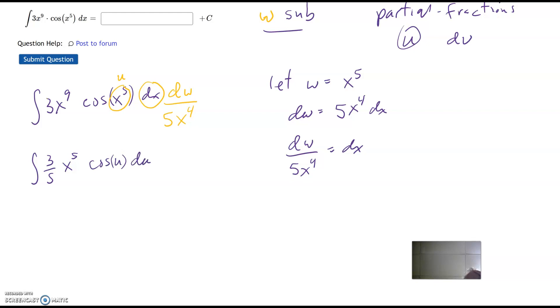All right, now I've got two variables. I've got an x and a u, and that's not going to fly. Even with partial fractions, I can't let u equal one variable and dv have another. But lucky for us, this x to the fifth, there we have it. So that equals w. So that I can substitute as well.